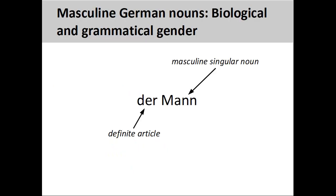You will recall from the presentation on German nouns that all singular nouns have a grammatical gender. This gender can be seen in the definite article. The biological gender of the noun 'man' agrees with its grammatical gender. The definite article 'der' shows that this is a masculine singular noun. When learning German, it is important to memorize the definite article with the noun.